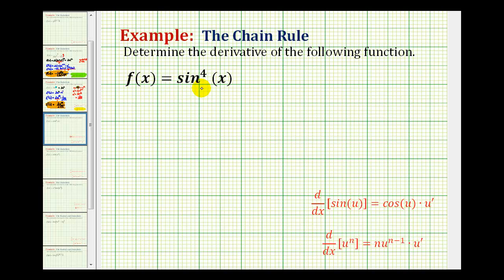So let's go ahead and take a look at this first function here, f(x) equals sine to the fourth x. The first thing we need to recognize here is that this is the same as sine x raised to the fourth power. So we do have a composite function, and therefore we'll have to apply the chain rule.